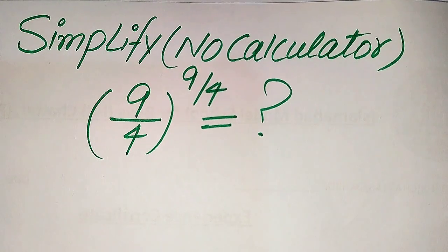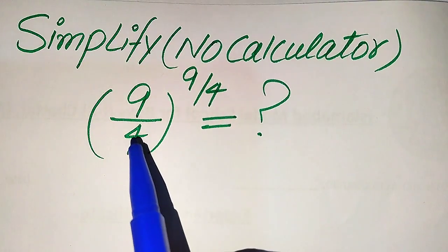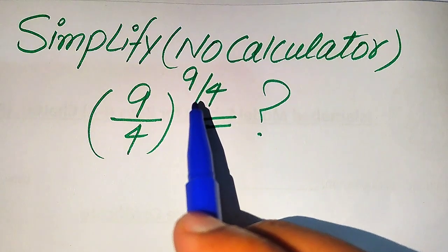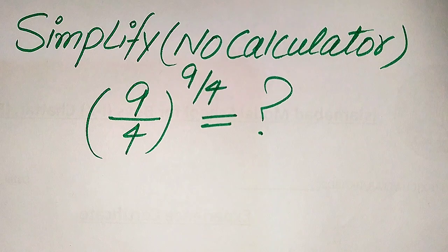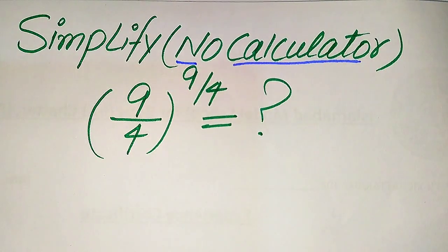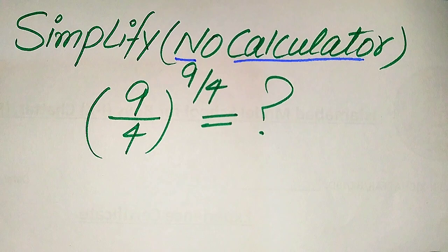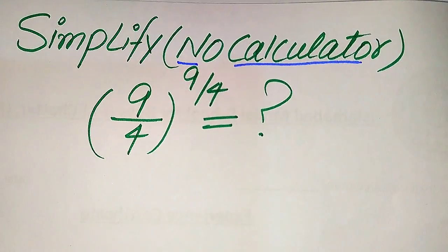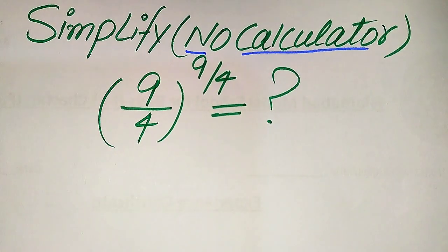Hello everyone. How to simplify this nice algebraic expression without using the calculator: if we have 9 divided by 4, and its whole exponent is 9 divided by 4. We write this algebraic expression into simplified form. Calculator is not allowed in this problem, so we need to do the solution stepwise. I hope you like this method, but if you have any other method in mind, please don't hesitate to write it in the comment section.